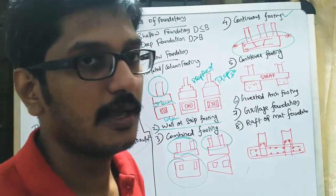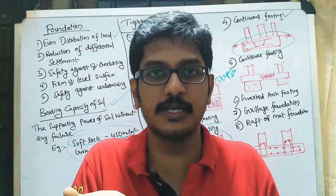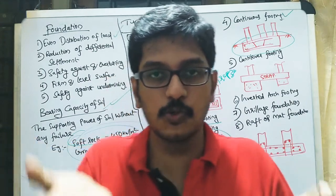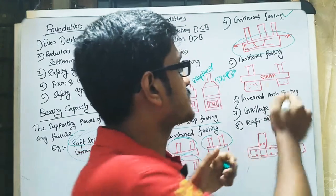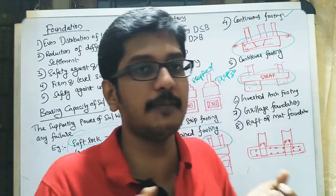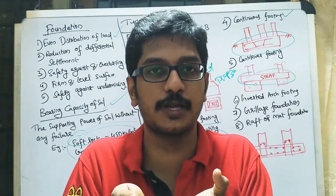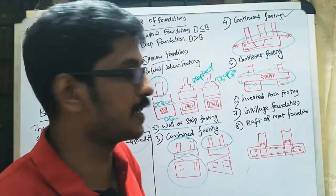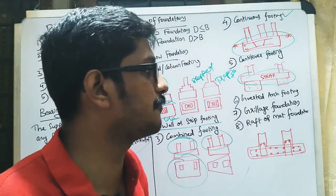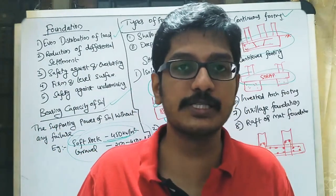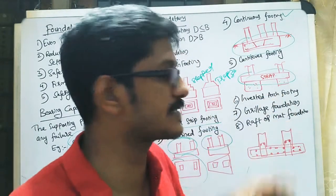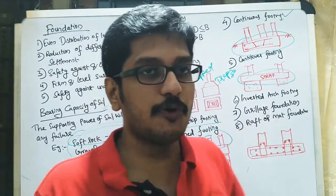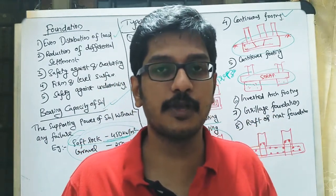The next type is cantilever footing. When the bearing capacity of soil is very low in one area, a strap — meaning a beam — is provided between two foundations to hold down two columns together. That is called cantilever footing. Then comes inverted arch footing, which is considered in the case of bridges and is shaped like an inverted arch.